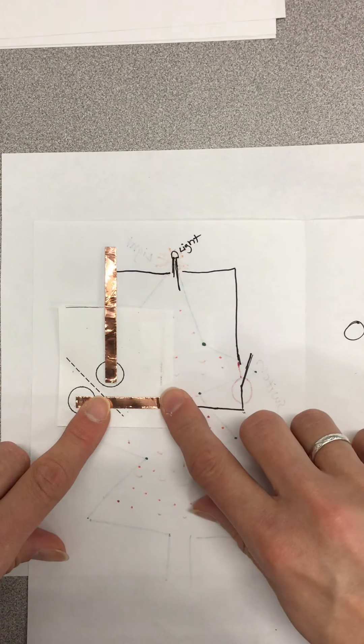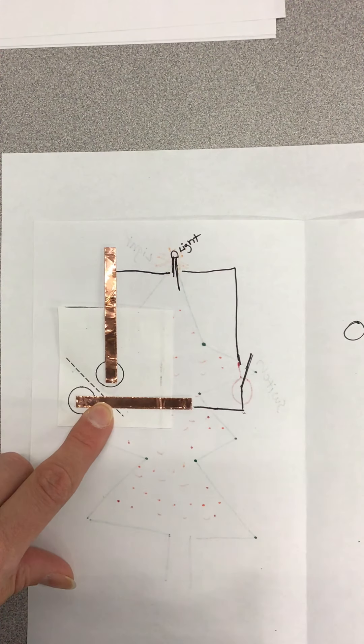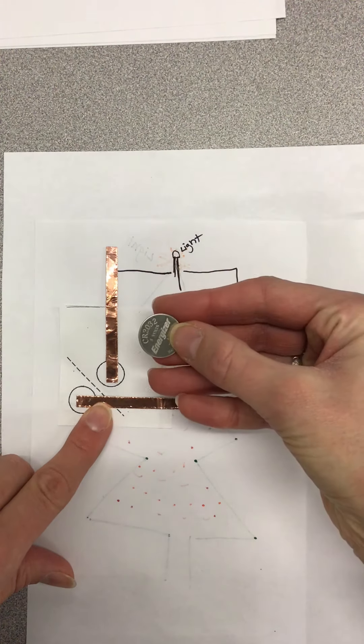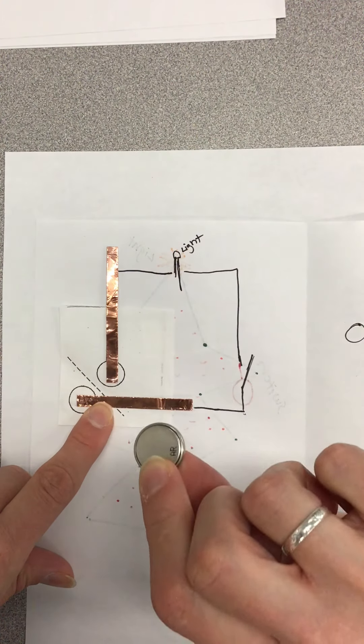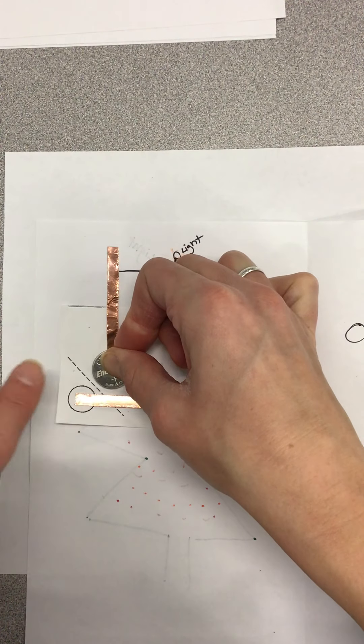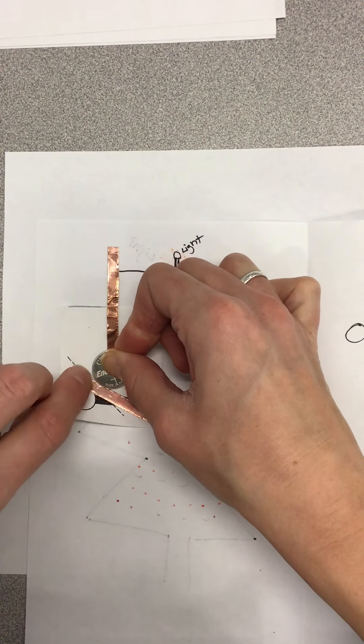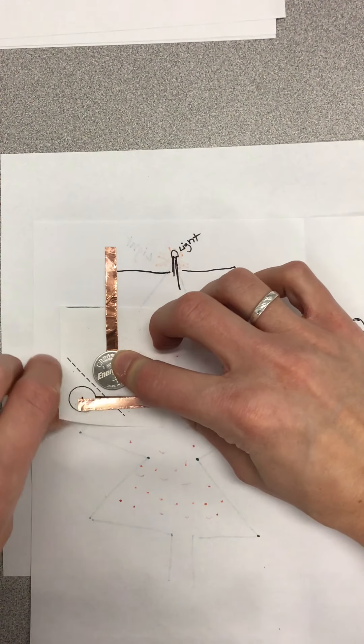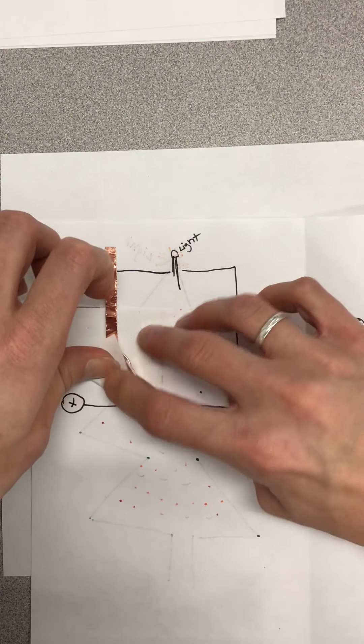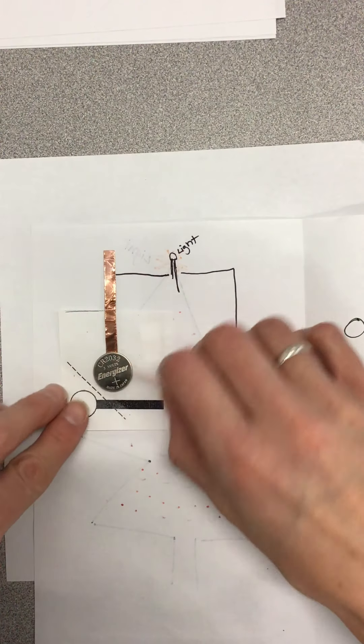Once you have that taped down, if you have your battery here you notice that's your plus side. So you want to put your minus sign right here and then your plus sign is right here, and you're going to fold this over and that will make your connection.